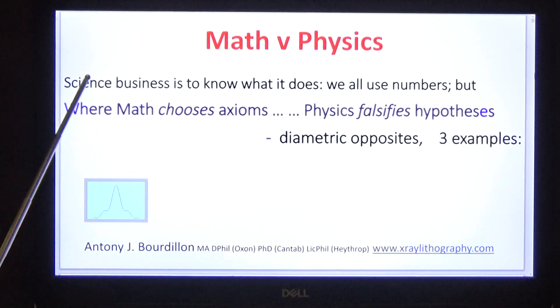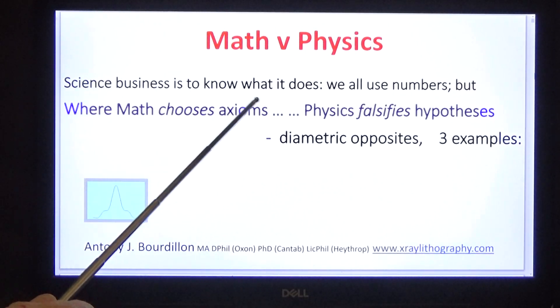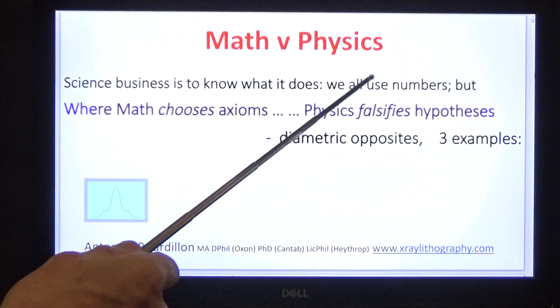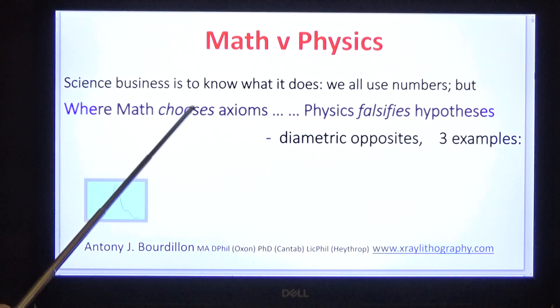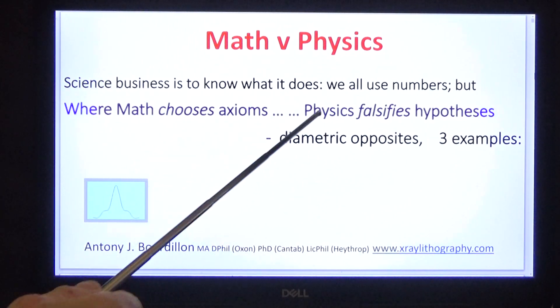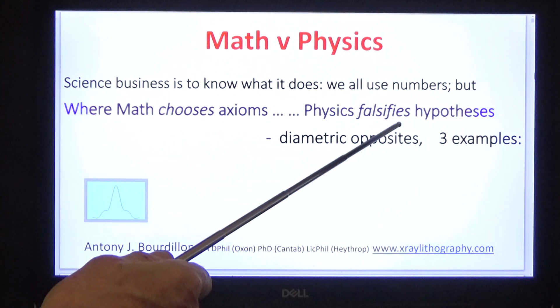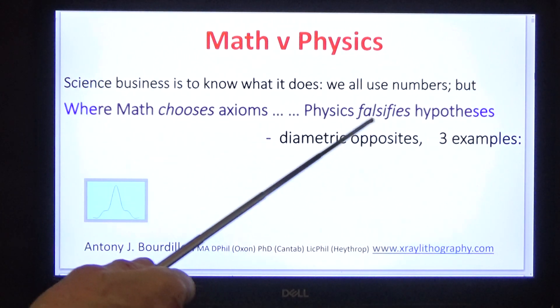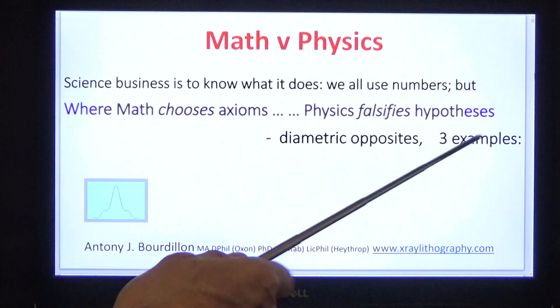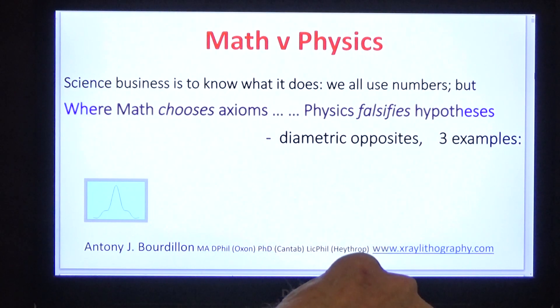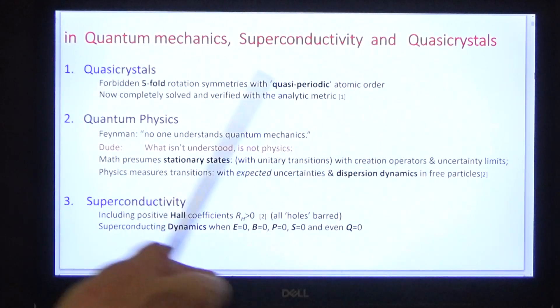It is the business of science to know what it does. We all use numbers, but where math chooses axioms, physics falsifies them. The two are diametrically opposed, and I give you three examples.